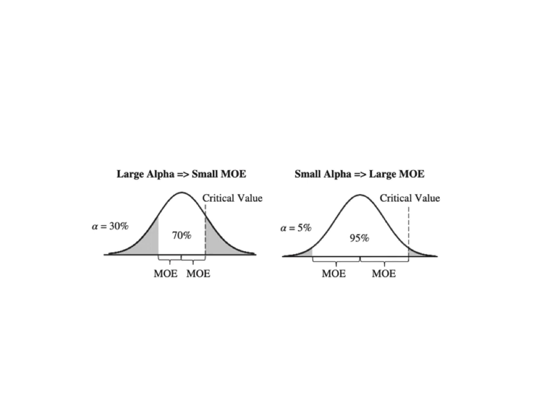Now 30% is an unusually large value for alpha, and it results in an unusually narrow margin of error. Most often, 5% is chosen as the value for alpha. This is the situation shown by the diagram on the right. The white area is wider, and the margin of error is half the width of the white area, so the margin of error is larger here than for the case on the left, where alpha is larger.